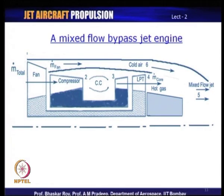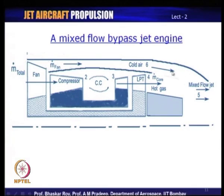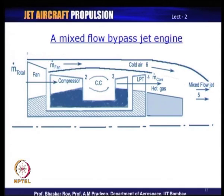The mixed flow bypass jet engine is one where the cold air does not create thrust of its own. The cold air bypasses the main engine, and towards the end the bypass is covered and guided toward the exhaust of the jet engine, where it mixes with the hot gas. The mixed flow — a combination of hot and cold gas — is then let out as a jet exhaust.